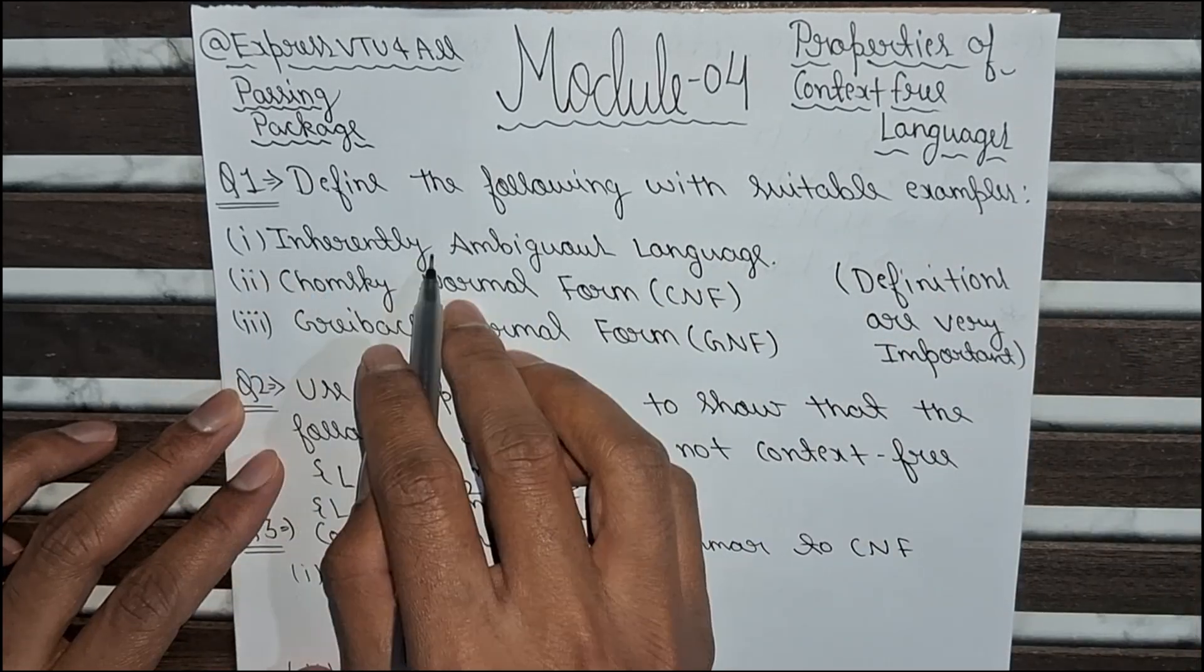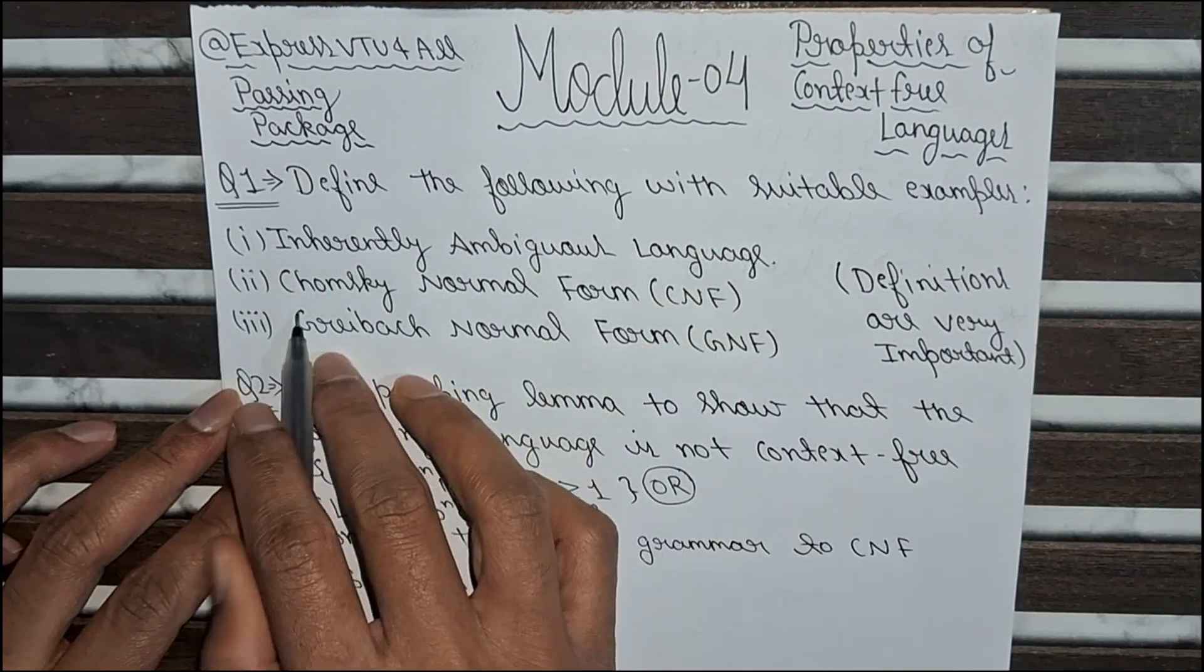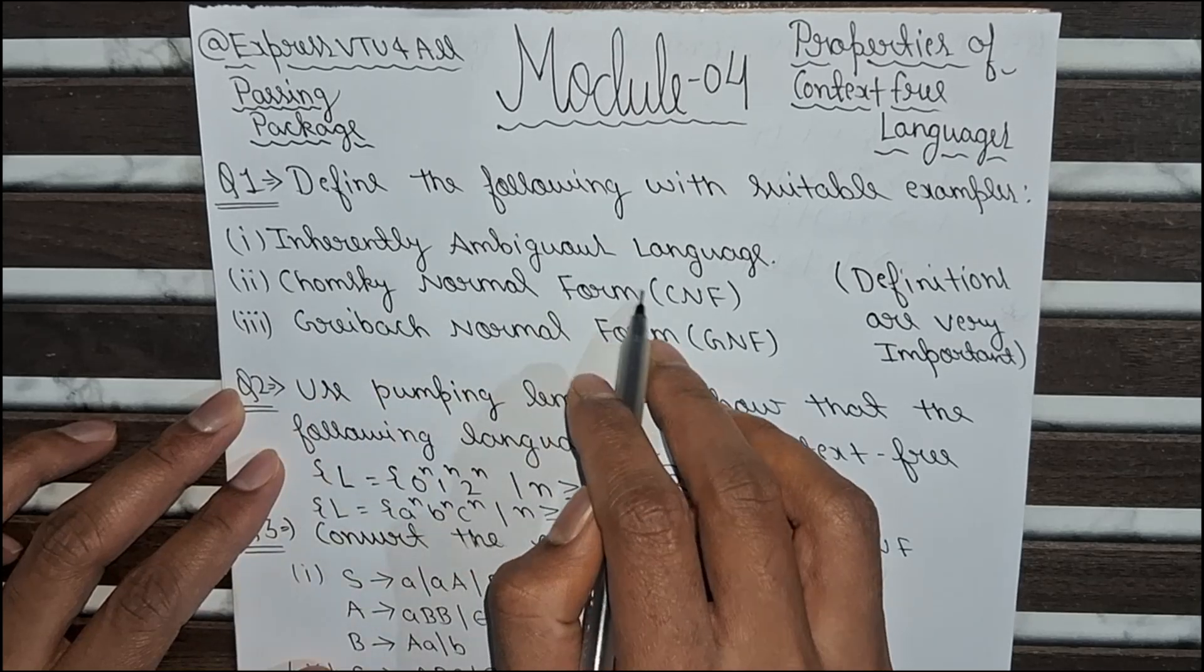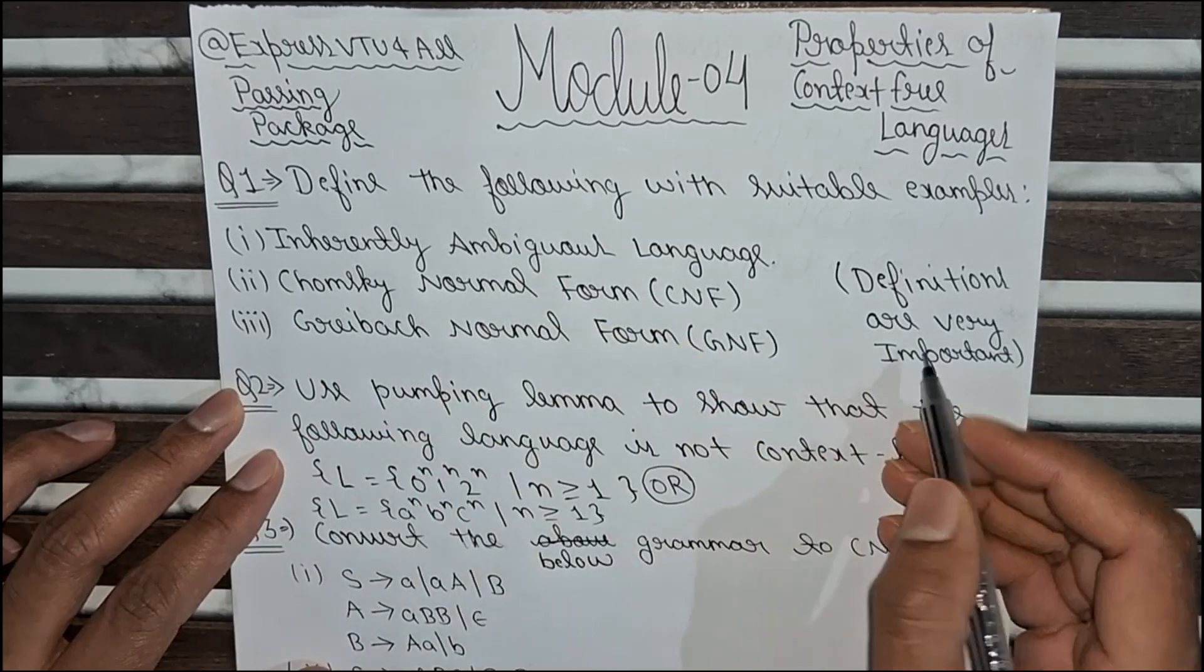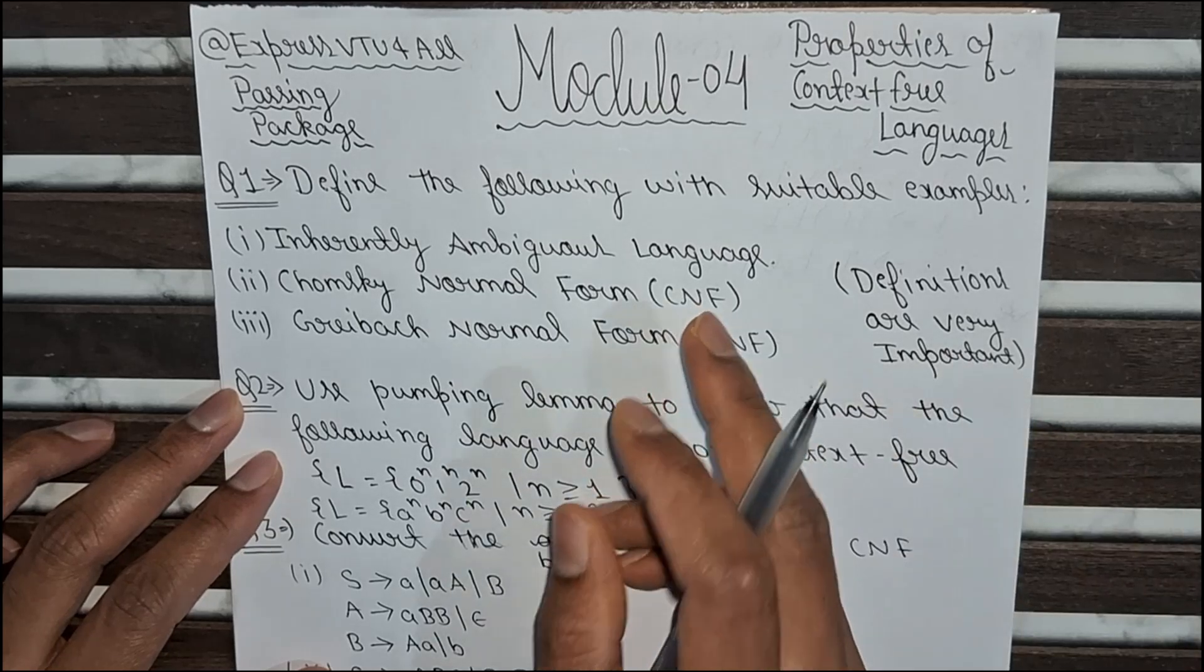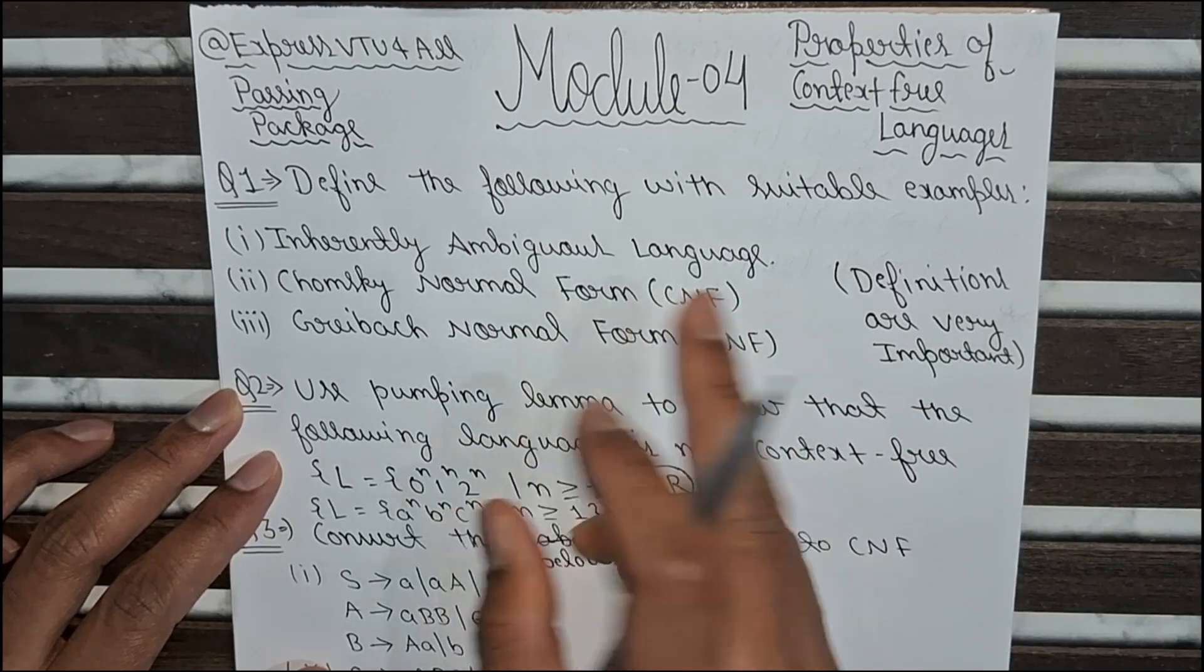First part is inherently ambiguous language. Second one is Chomsky Normal Form. And third one is Griback Normal Form. These definitions are most important. You have to remember it properly and write neatly in the examination.